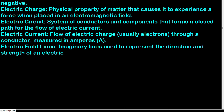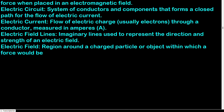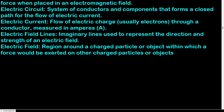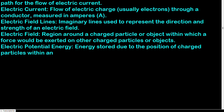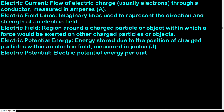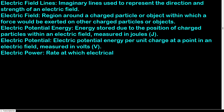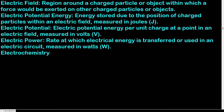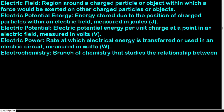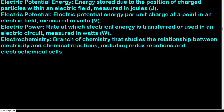Electric field lines: imaginary lines used to represent the direction and strength of an electric field. Electric field: region around a charged object within which a force would be exerted on other charged particles. Electric potential energy: energy stored due to the position of charged particles within an electric field, measured in joules. Electric potential: electric potential energy per unit charge at a point in an electric field, measured in volts. Electric power: rate at which electrical energy is transferred or used in a circuit, measured in watts. Electrochemistry: branch of chemistry studying the relationship between electricity and chemical reactions.